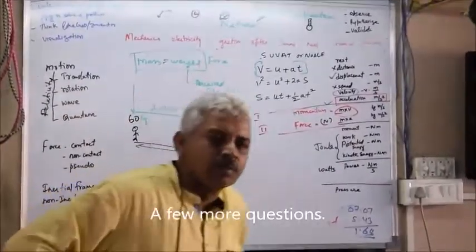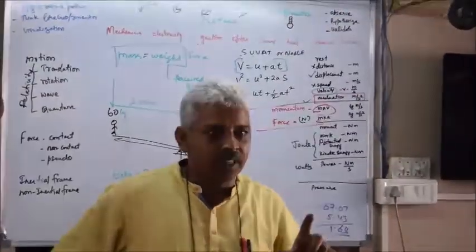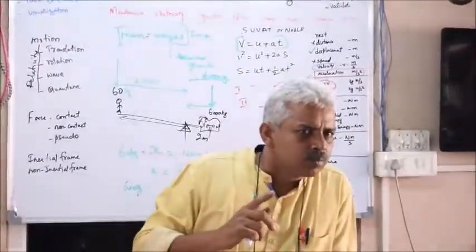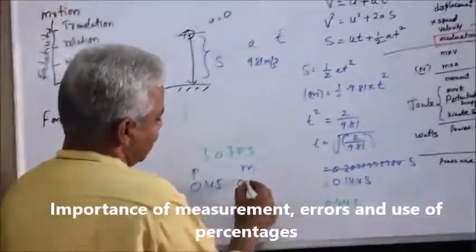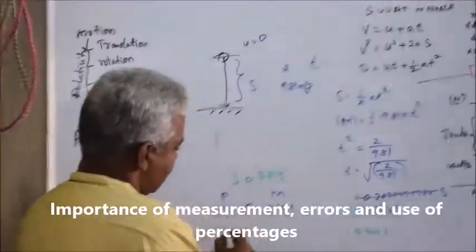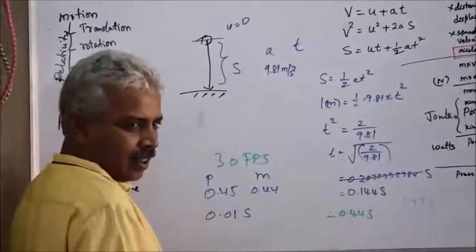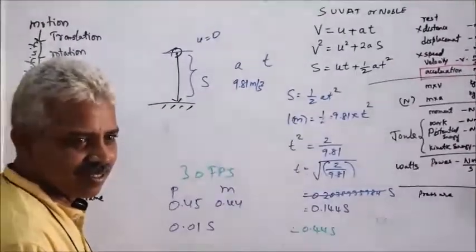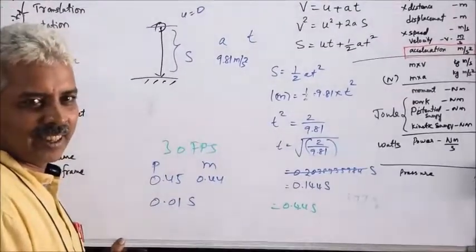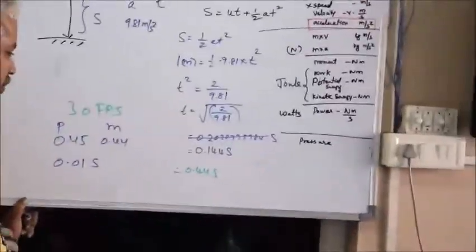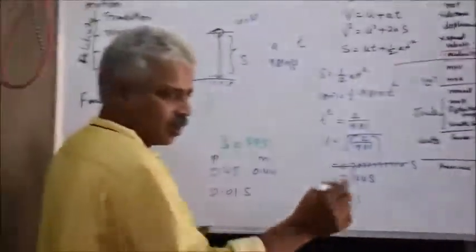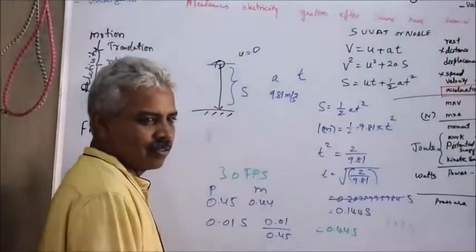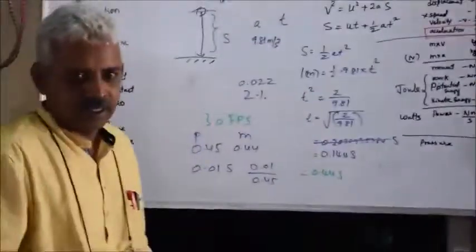It's the pressure difference. We went to the bullet train — the g-force. The measured value was 0.44 and the difference was 0.01 seconds — so what is the error? The percentage of error is about 2%, so 90% is correct. 0.01 divided by 0.045 gives approximately 2% error.